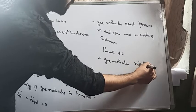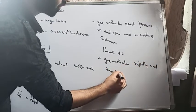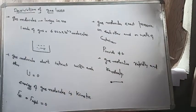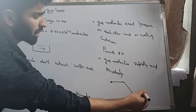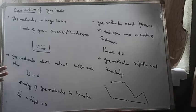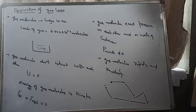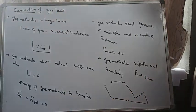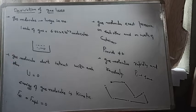Gas molecules move rapidly and randomly. The motion is random — suppose a gas molecule moves in one direction, then another, and so on. The motion is totally unpredictable; a gas molecule can move in any direction. The probability for motion in any direction is equal — there is no preferred direction for the motion of a gas molecule.